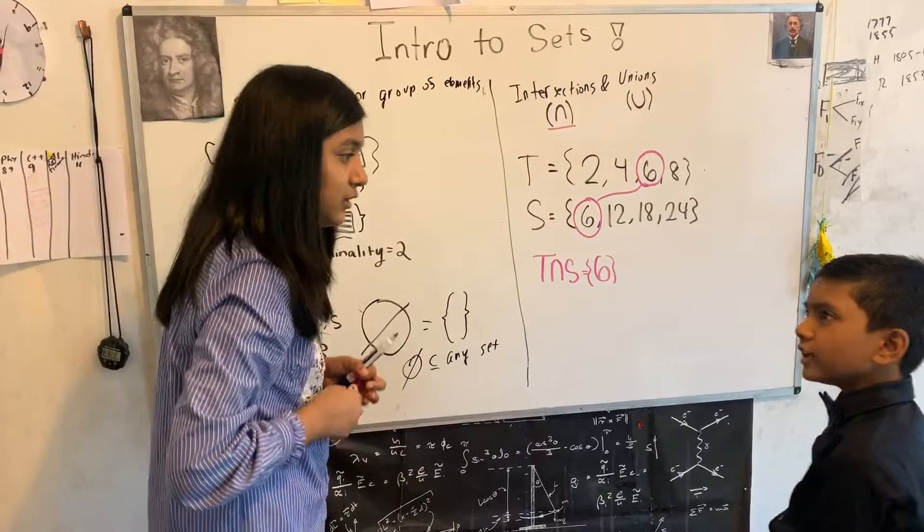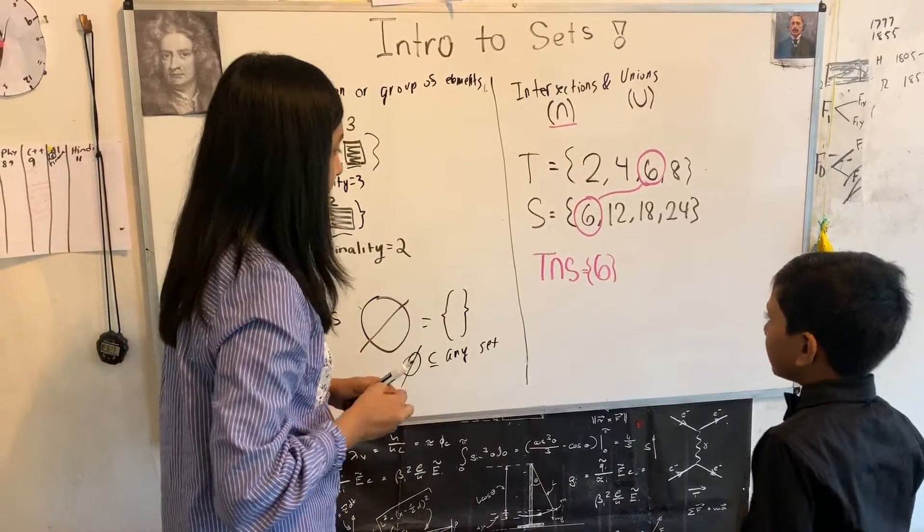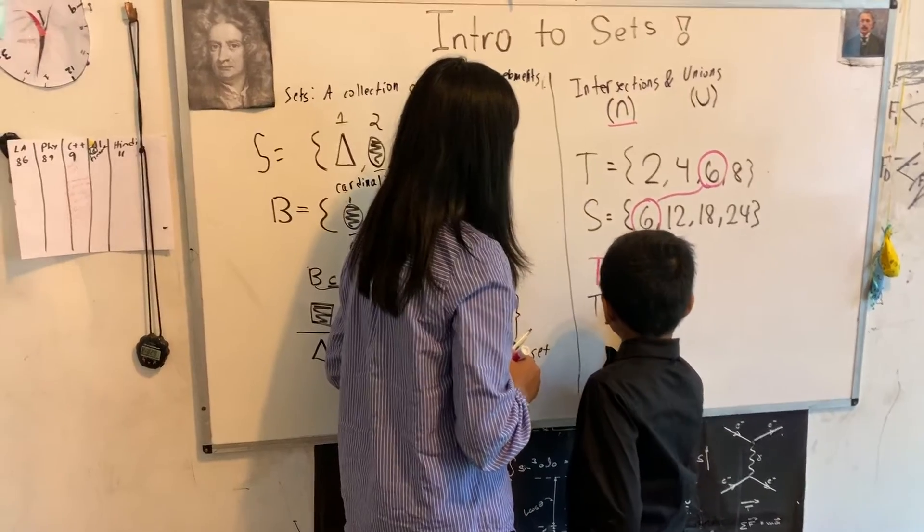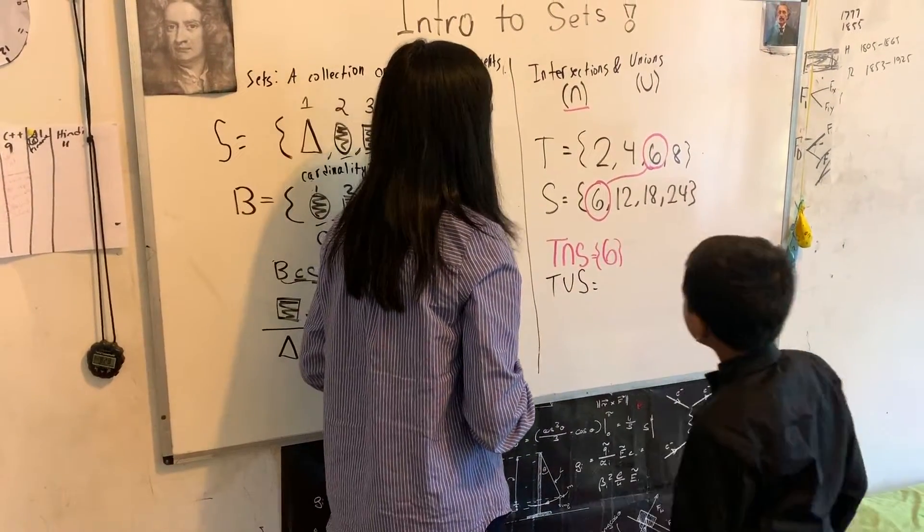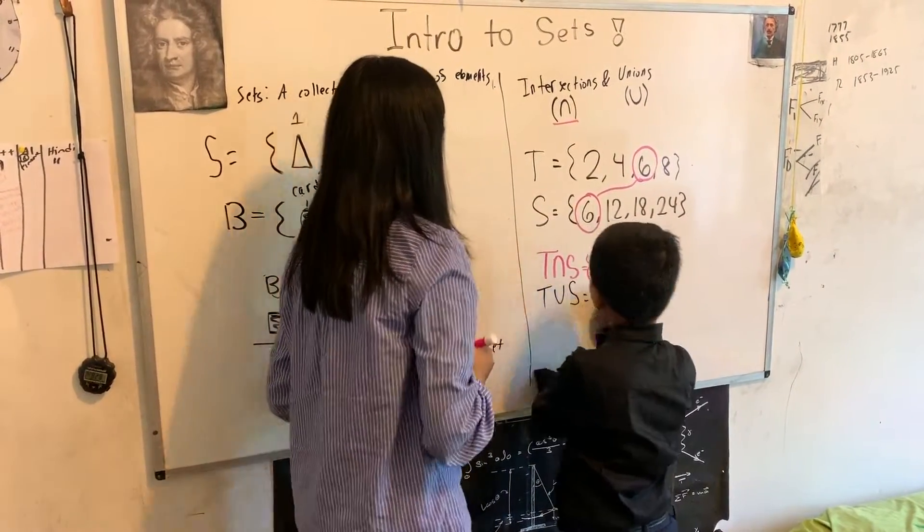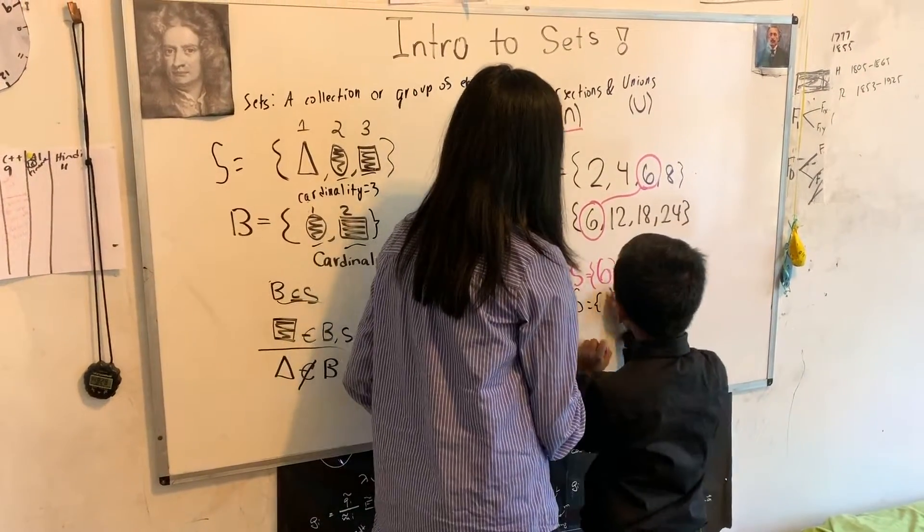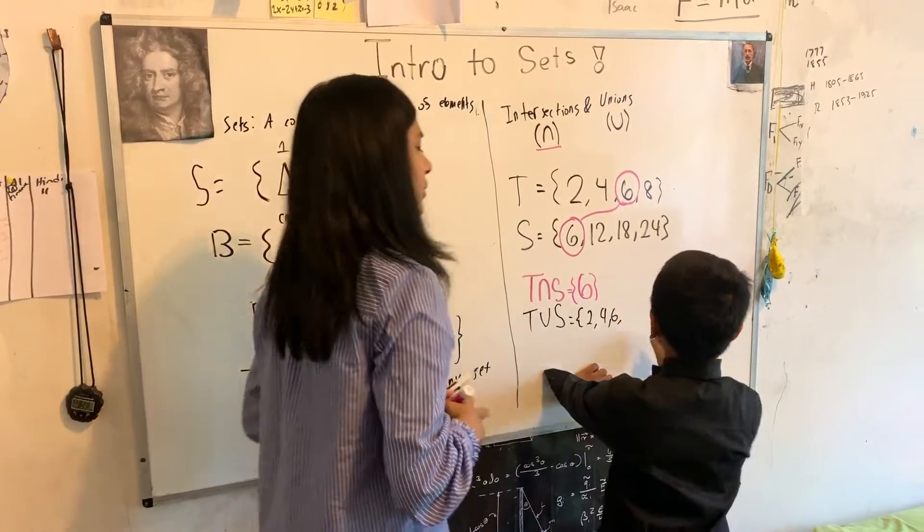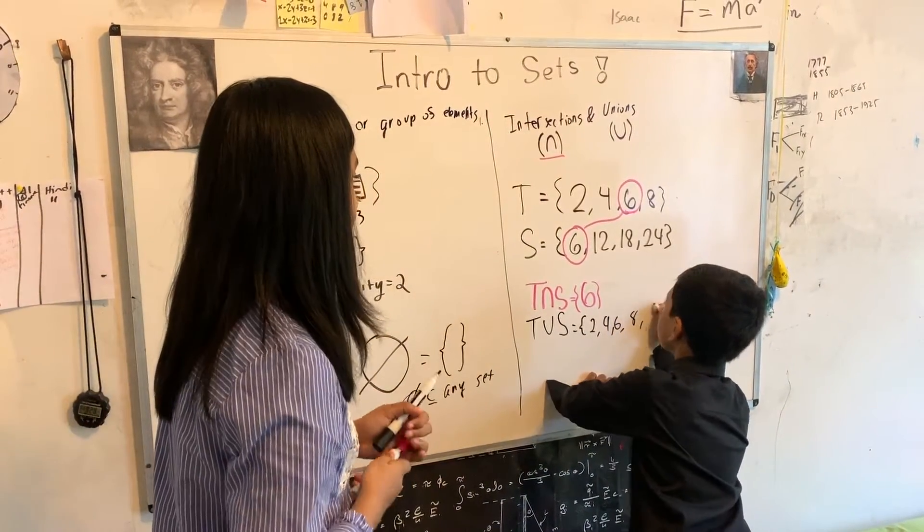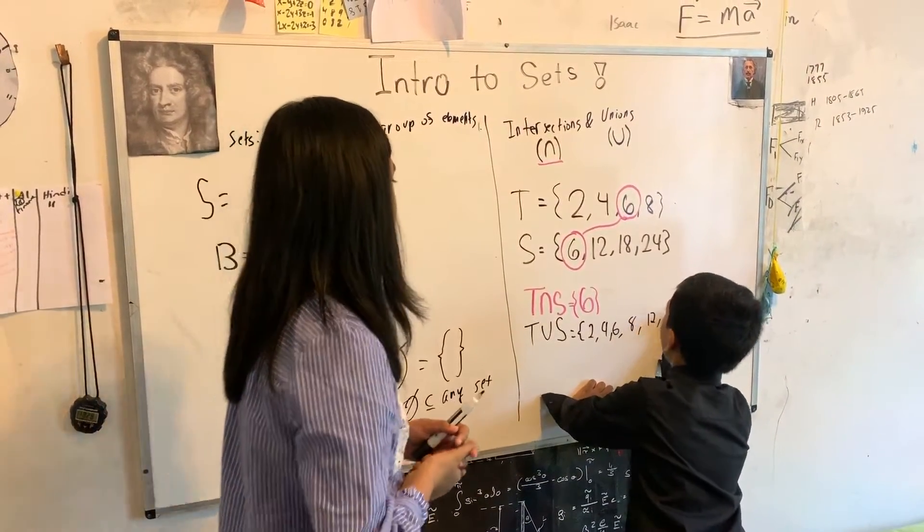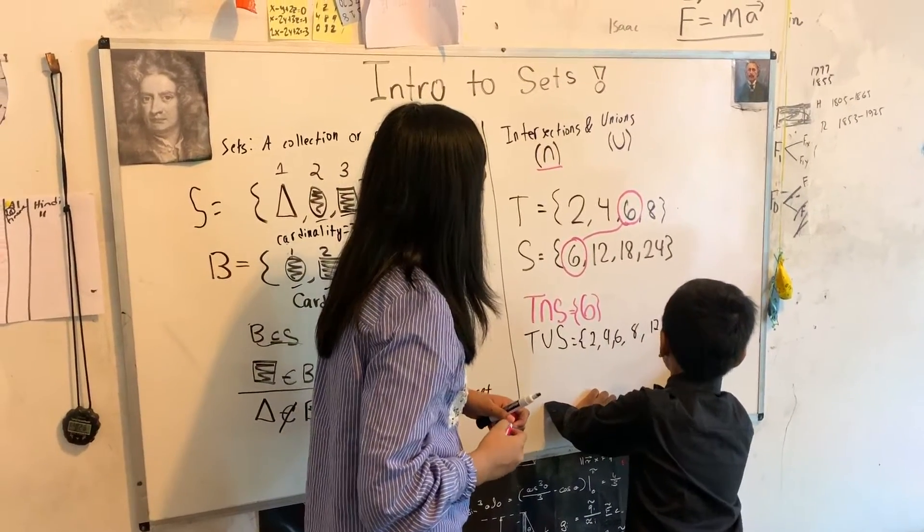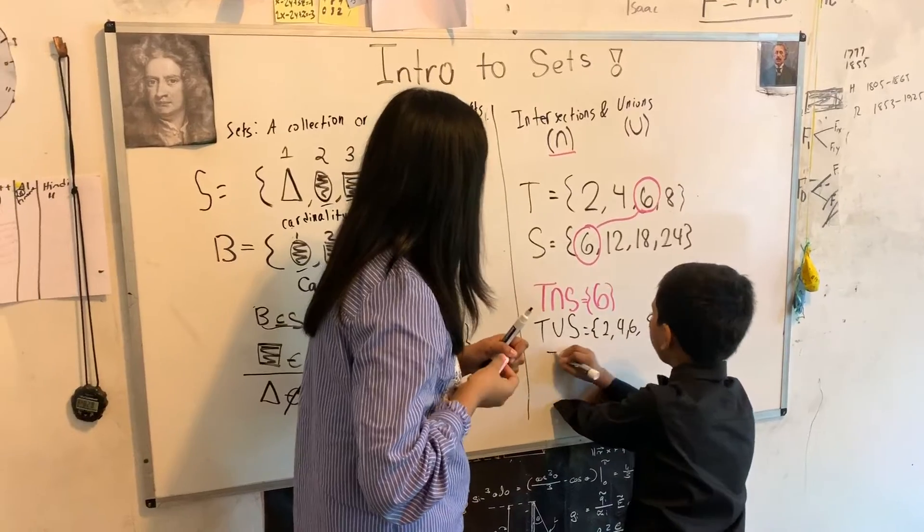Now let's write the union. Okay. So the union would look like T union S. Like that? Yep. Alright, now let's put all the numbers. Well, two, four. I'm not sure if six is supposed to be repeated twice. No, no. Once. Once. Okay. Two, four, six, eight. Twelve. Eighteen. And twenty-four. Well, that's the union of both of the sets.